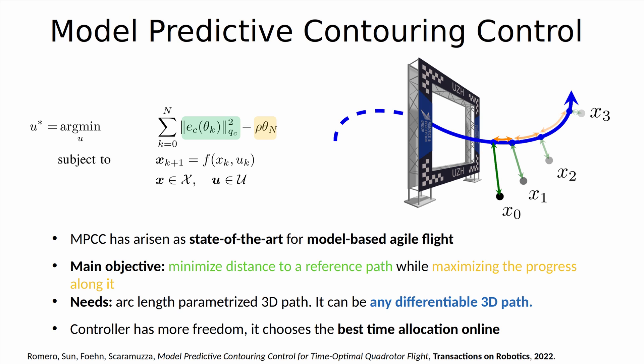In this figure, the progress is shown in orange, and the distance to the reference path is shown in green. The path to be tracked, which is shown in blue, needs to be arc length parameterized, but it does not need to be feasible. It can be any differentiable 3D path and therefore can be generated very quickly. Since the reference path is not parameterized by time, the time allocation is optimally chosen by the controller online.